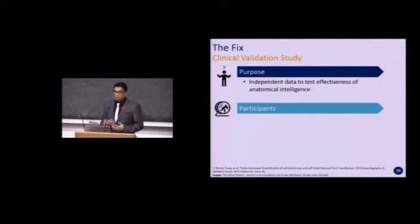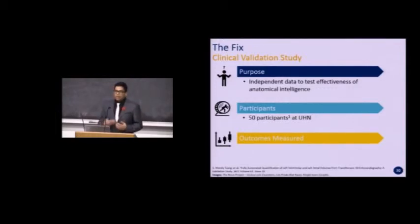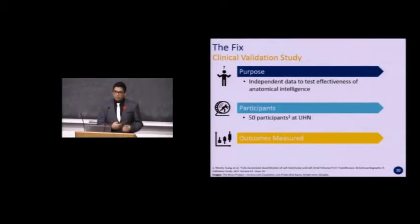Participants will consist of 50 participants at the UHN hospital centers, chosen due to its large size and influence in the Canadian healthcare market. The outcome measures will first be the time taken for scan — comparing image acquisition time using conventional methods versus with the assistance of the anatomical intelligence software. Secondly, the anatomical intelligence software is able to perform automated tasks required for thyroid cancer diagnosis from ultrasound images, so measurements done manually by physicians will be compared to those of the anatomical intelligence system.